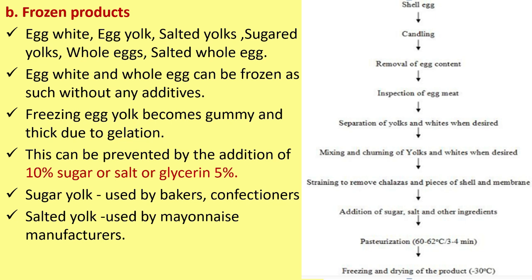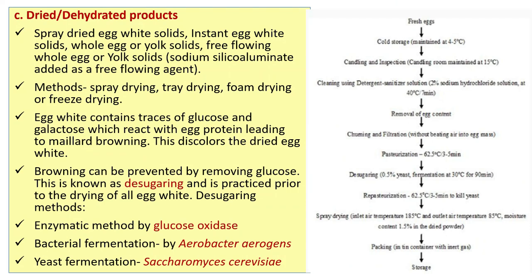Freezing egg yolk causes it to become gummy and thick due to gelation. This can be prevented by addition of 10 percent sugar, or salt, or 5 percent glycerin. Dried/dehydrated products include spray dried egg white solids, instant egg white solids, whole egg or yolk solids, and free-flowing whole egg or yolk solids.